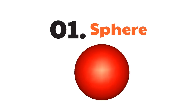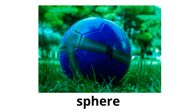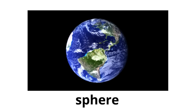The first 3D shape we're going to learn is the sphere. The sphere is the 3D version of the circle — it's perfectly round. There are spheres all around us. One we see all the time is a ball, like a soccer ball — a soccer ball is a sphere. And this sphere here? It's the Earth — our own planet is a sphere!